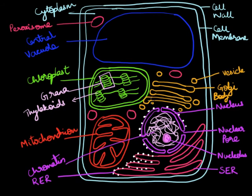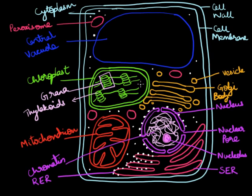Another step is to draw the ribosomes that are found freely in the cytoplasm. Just draw spots in the cytoplasm, making sure not to put them inside any of the membrane-bound organelles. The exceptions are the chloroplast and the mitochondria — some ribosomes are found within the chloroplast as well as within the mitochondria, but ribosomes are not found inside any of the other organelles.